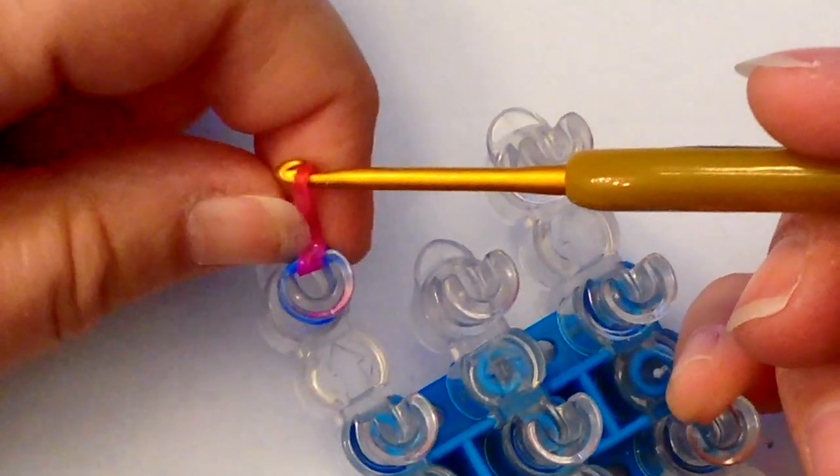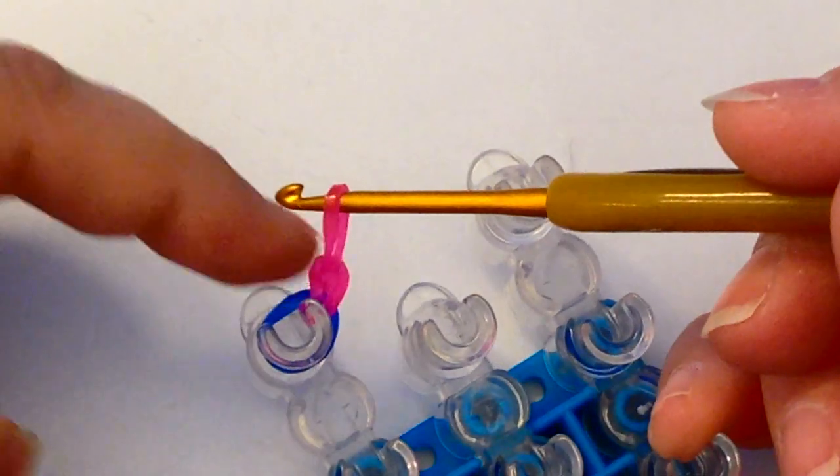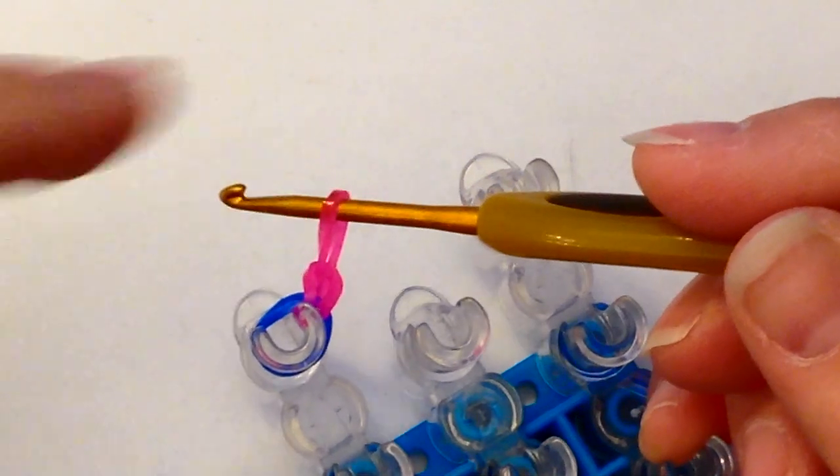Now budge that around so that it's out of the way. Leave this little loop on your hook.